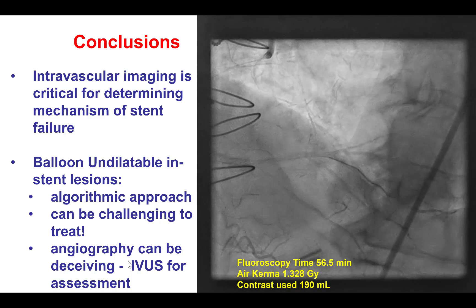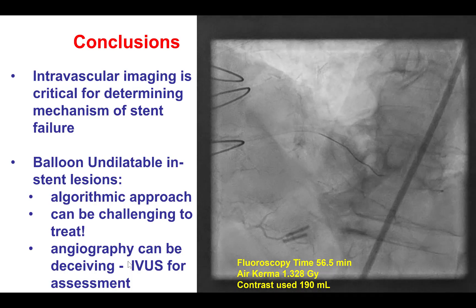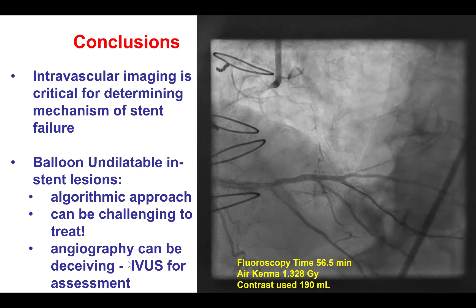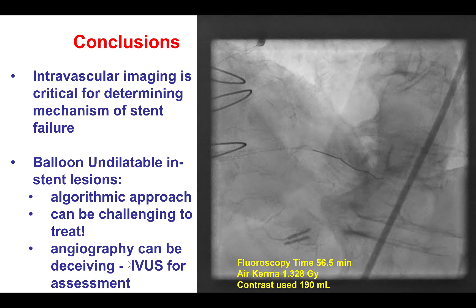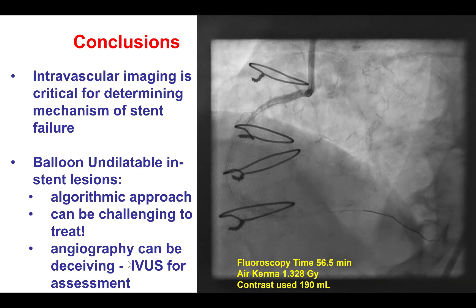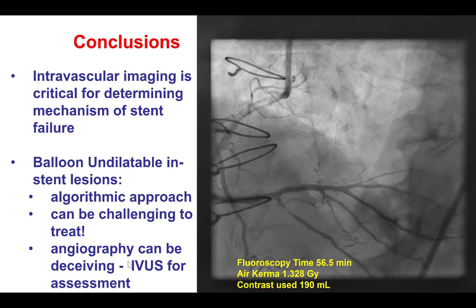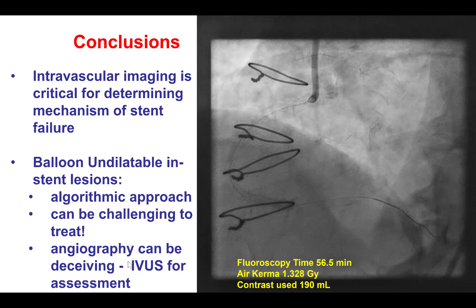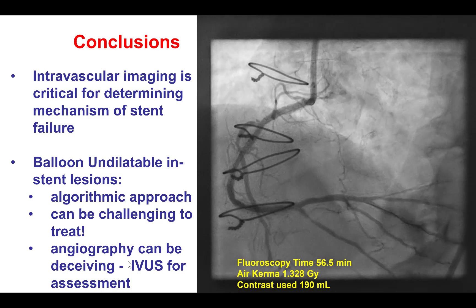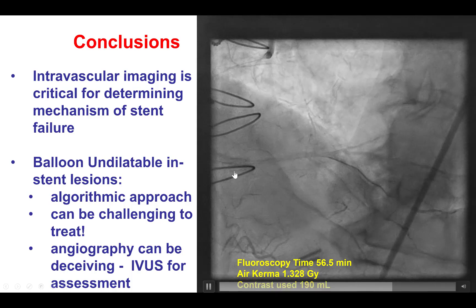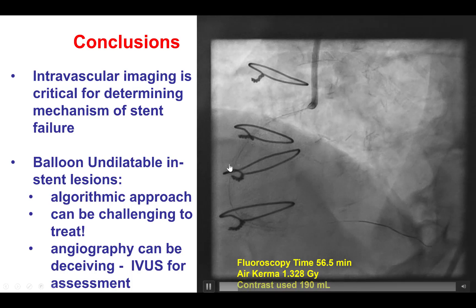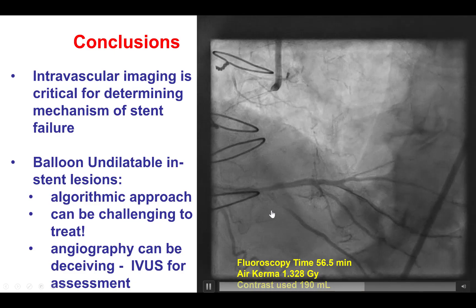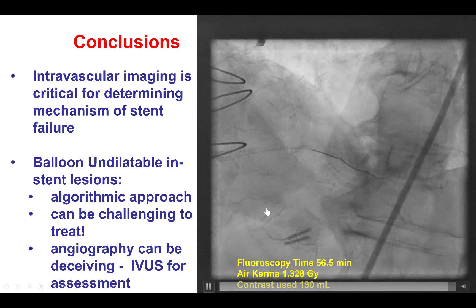This case provides several useful lessons. The first is that intravascular imaging is critical in cases of stent failure and in-stent restenosis, because often the vessel may be underexpanded, and this may not always be apparent by angiography. At the end of the case, angiographically we thought we had a fairly nice result, but intravascular ultrasound demonstrated we were still severely underexpanded.